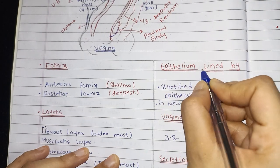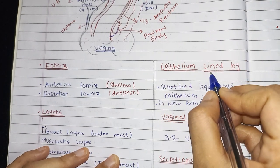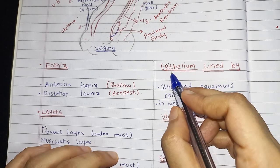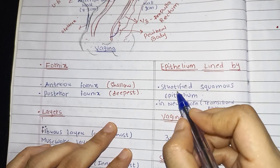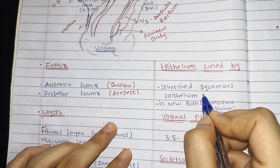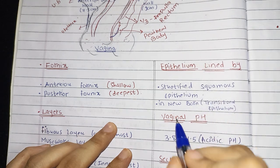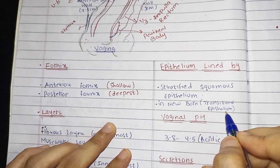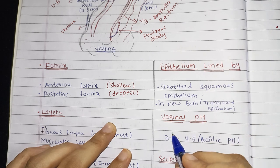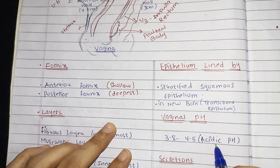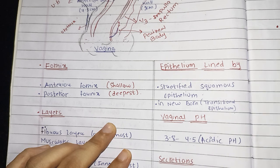Now coming to the epithelium. Vagina is lined by epithelium called stratified squamous epithelium, whereas in newborns it is lined with transitional epithelium. Vaginal pH is ranging from 3.8 to 4.5 — that is an acidic pH.